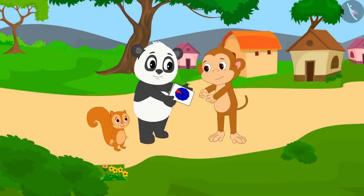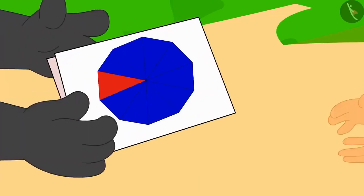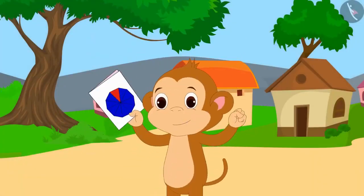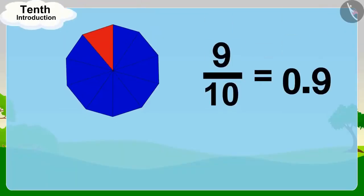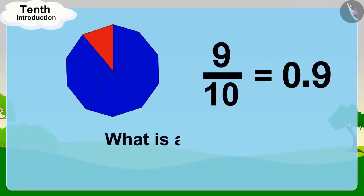Chanda and Golu were very happy. They immediately went and gave the greeting card to Babban. On receiving that beautiful greeting card, Babban started dancing happily. Children, in this video we learned about what is a tenth. In the next video, we will learn more about it through some interesting examples.